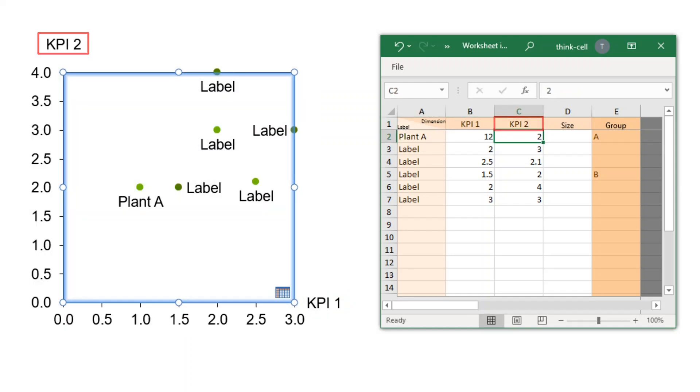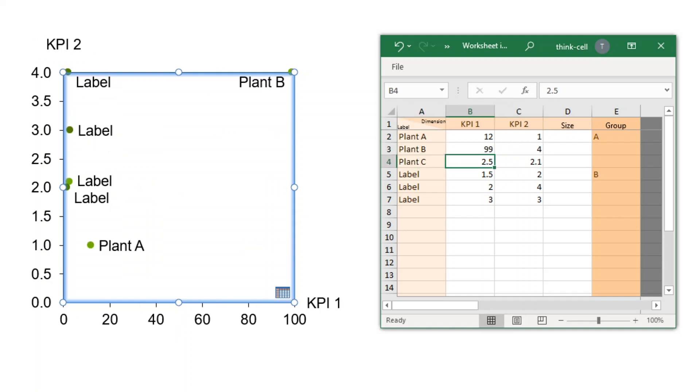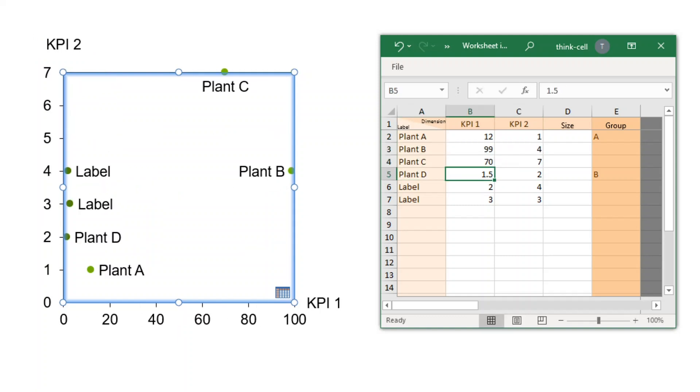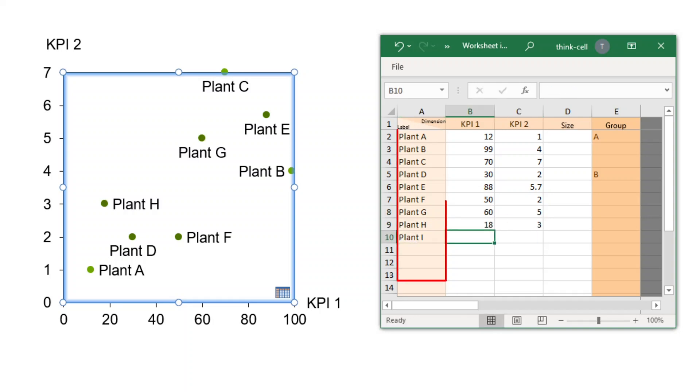In our example, we have KPI data for different manufacturing plants of the company. Type in the two values for each plant in separate rows, as each row in the datasheet represents a single data point. Add the names of the plants in the first column for labeling the data points in the chart.